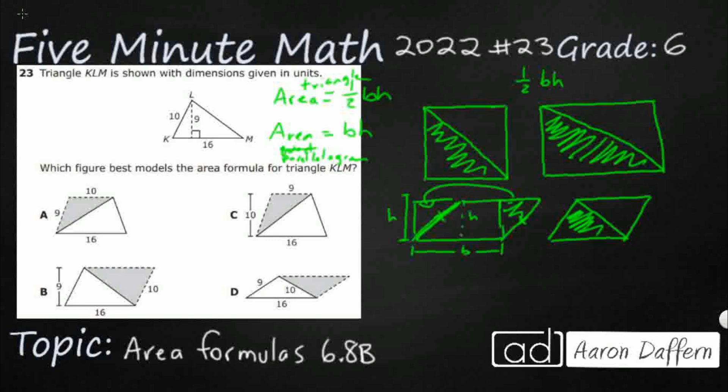Again, so the reason why we say the area of a triangle is one-half base times height is because you could take any parallelogram, and you could just cut it in half, and you get a triangle. So let's see which of these looks like that.